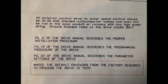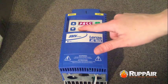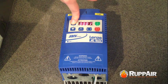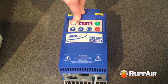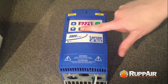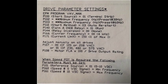To begin programming, input the password shown on the wiring page into the VFD as shown. Once completed, the channels can be adjusted to alter the settings.